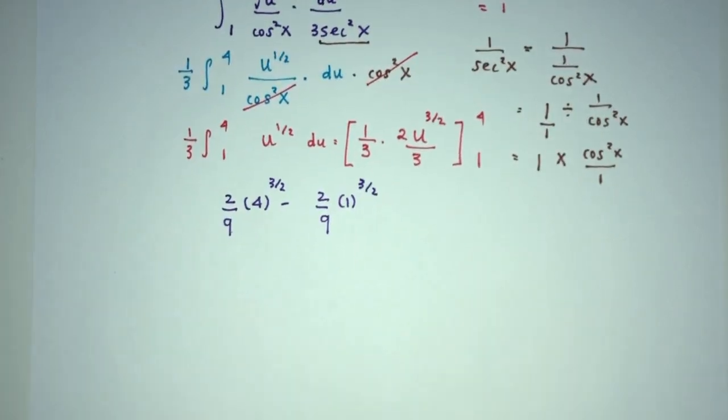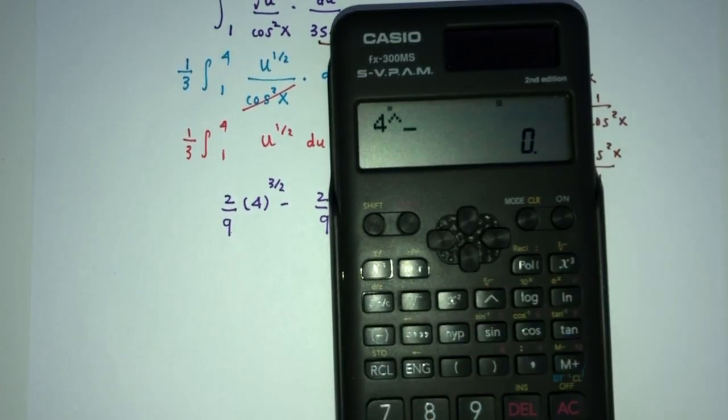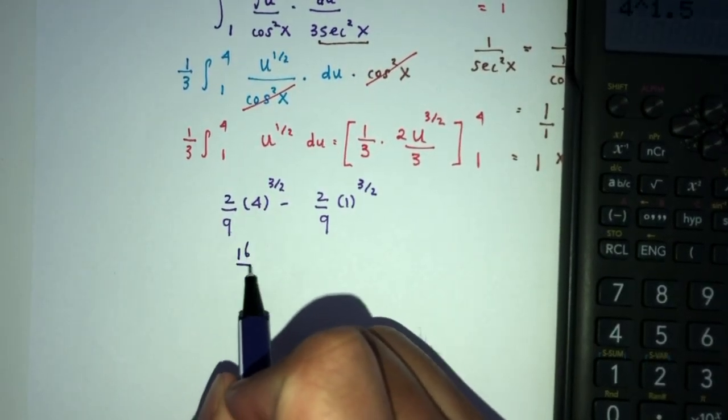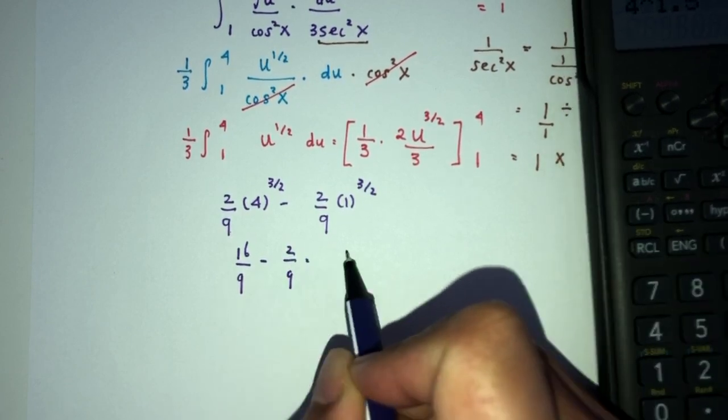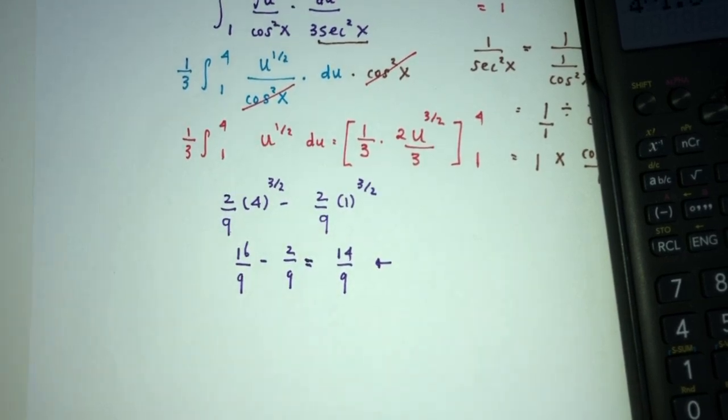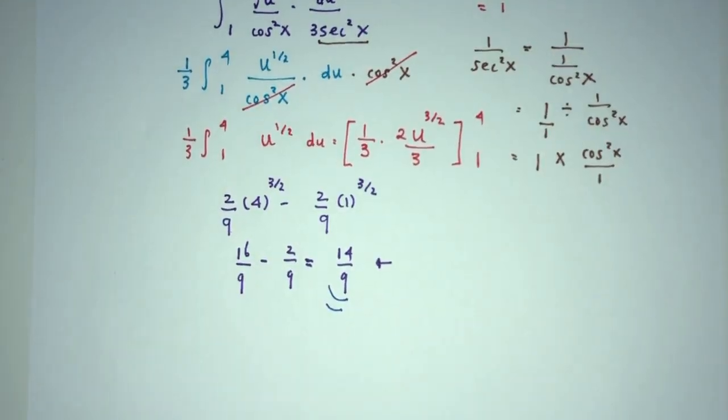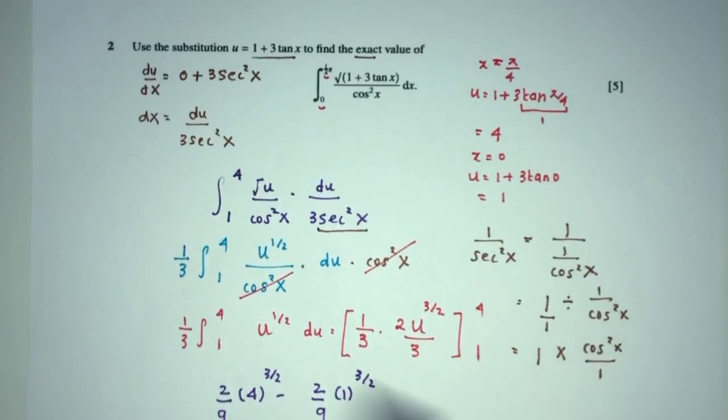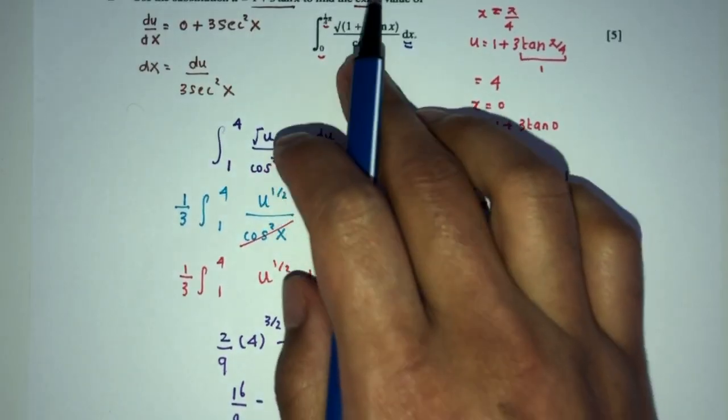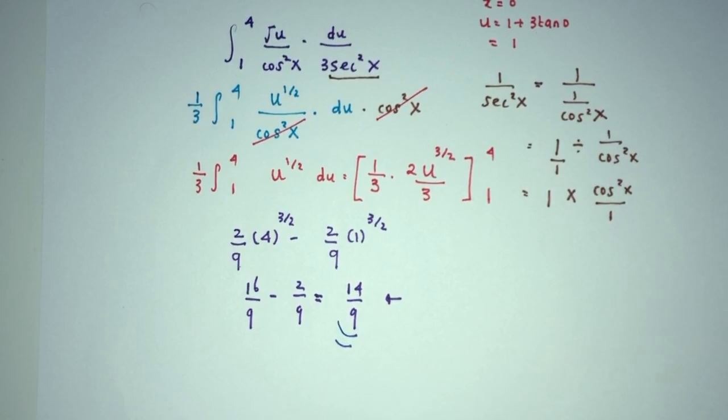Simplify further. Now we have to simplify this one, obviously. 4^1.5 is 8. That will become 8 times 2 is 16, over 9 minus 2/9. That will be 14/9. Alright, cool. This is your answer for question number 2 as the exact value. I think the main thing here is to understand we have to find the u by dx because we have to replace this of course. And then we have to cancel out the cos² at the end. As you can see, you will have just this one in the end. Now this is your question number 2.